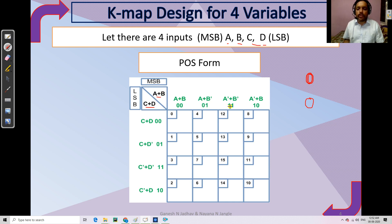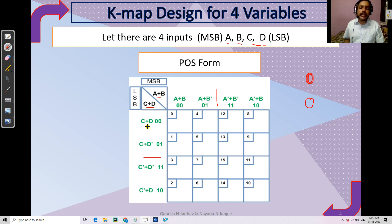Using Gray code, the sequence is 00, 01, 11, 10 on both axes. So on this side A, B and here C, D. I write A plus B because when both are 00, A plus B-dash gives zero — B must be zero so we write B-dash. When both are 11, we write A-dash plus B-dash. When 10, we write A-dash plus B. Similarly for C, D: C plus D, C plus D-dash, C-dash plus D-dash, C-dash plus D.